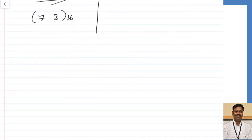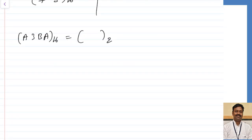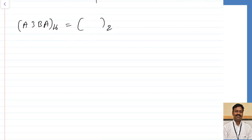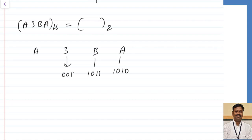Let us take another example: convert A3BA in base 16 to binary. Since hexadecimal has 16 symbols, each digit is represented with 4 binary bits. So: A=1010, 3=0011, B=1011, A=1010. Combining these directly gives the binary value 1010001110111010 in base 2.